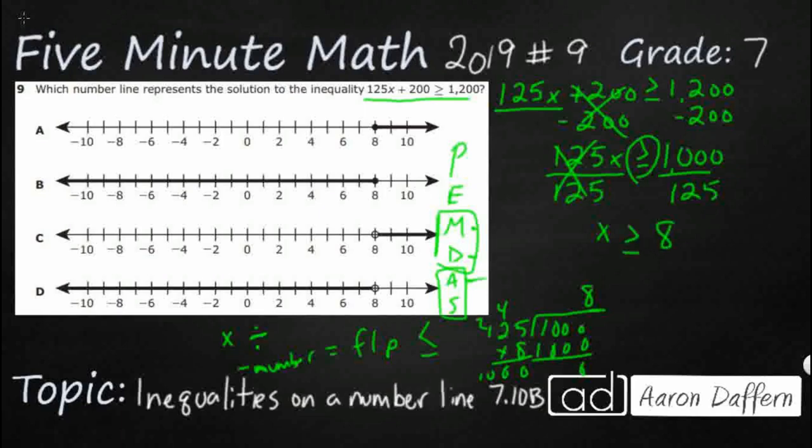All right. So now let's look at our answer selections. So you notice everything is hanging out right here at this 8. So that doesn't really help us. But we need to look at our direction. So x is greater than or equal to 8.